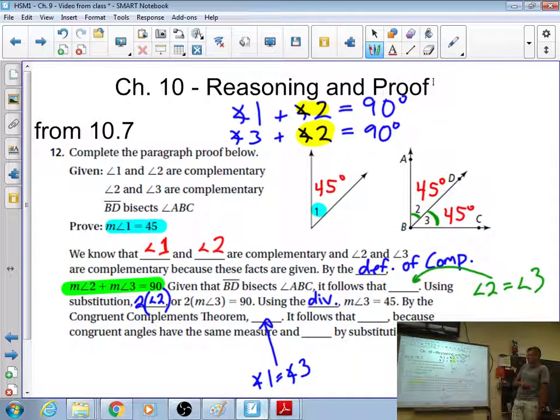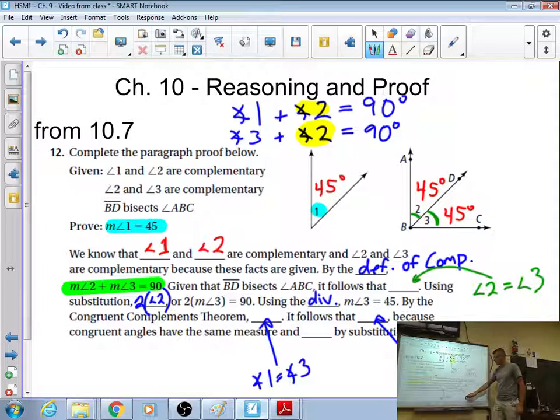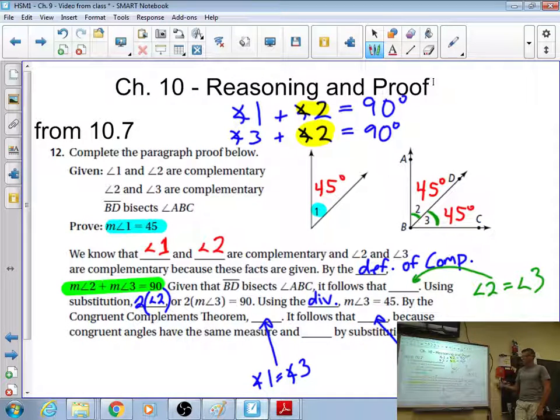It follows that blank because mirror angles have the same measure, so it follows that angle three, so this would be angle three equals 45. Because we know that they're congruent, we know that they are the same size, so that then follows is that we know that angle three is 45 then because mirror angles have the same measure, and because mirror angles have the same measure and oh, why didn't I say size? I don't know what they're looking for there.